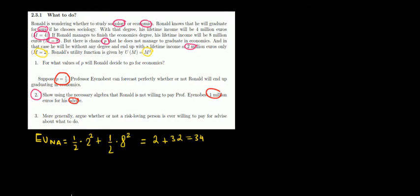Now let's compare this to the expected utility of paying for the advice. So the expected utility for paying the advice would be the following: 1 over 2, the probability of failing times—and now this is the key—what's going to be the expected income if we know for sure that we fail?